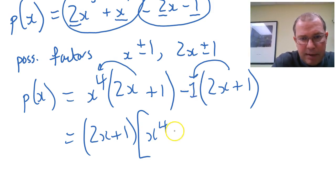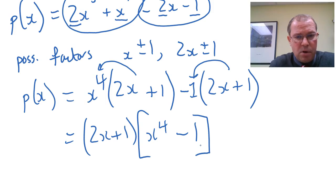When you've got a negative outside a bracket, I've got minus 1. So very quickly, we know that this degree 5 polynomial is 2x plus 1 times x to the 4 minus 1. Isn't that cool.